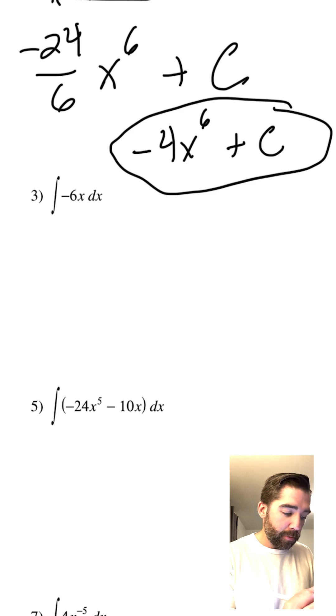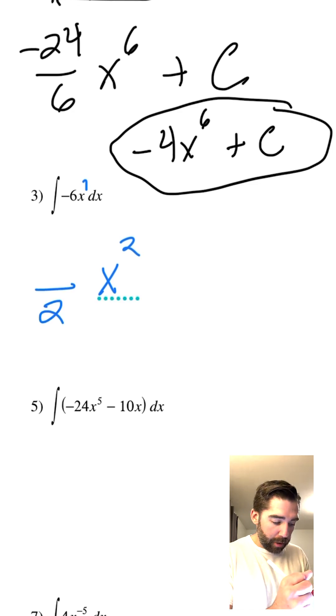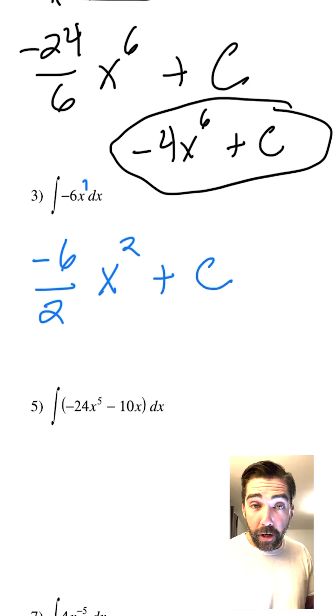Negative 6x, well that's an x to the 1. Add 1, that would give us x squared, which means we need to divide by 2 right away. Now I'm going to bring down that negative 6, and this is plus c. There's our answer.